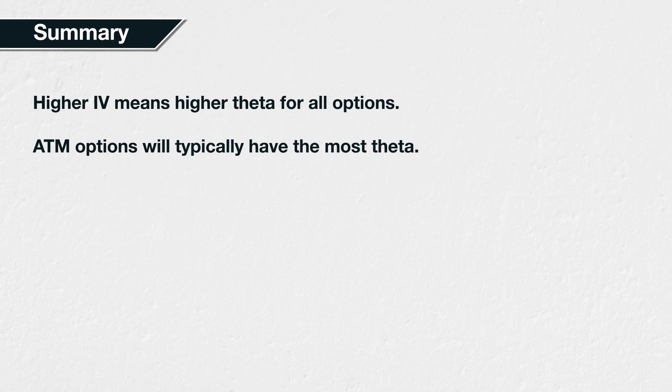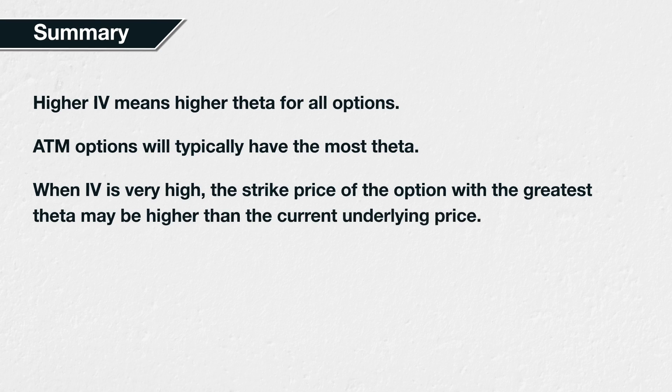This decreases in both directions away from the current underlying price. When implied volatility is very high, this can increase the strike price at which the theta is greatest, such that it is higher than the current underlying price. But the general principle remains: assuming all else remains the same, higher implied volatility means higher theta, and lower implied volatility means lower theta.